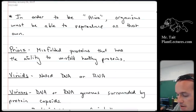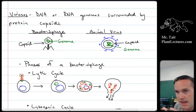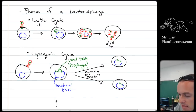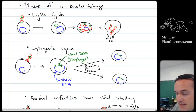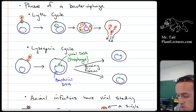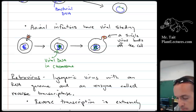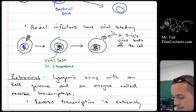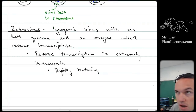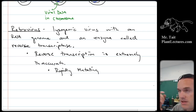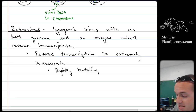Viruses and stuff — a virus is basically just a genome encased in a protein capsid. Viruses go into a couple different phases. The lytic cycle is where they make a whole bunch of viruses and then destroy the cell and release themselves. The lysogenic cycle is where they insert their DNA into the chromosome of the host and then wait while the host reproduces. Animal infections are mostly a lysogenic cycle with a little bit of viral shedding at the same time. Retroviruses are organisms that have RNA as their genome but also contain reverse transcriptase, which allows them to make DNA from their RNA. It's very error-prone, which leads to many mutations, so retroviruses tend to mutate rapidly.